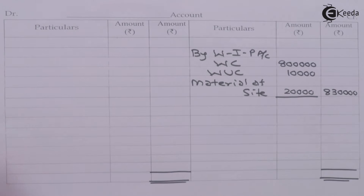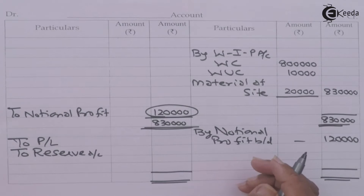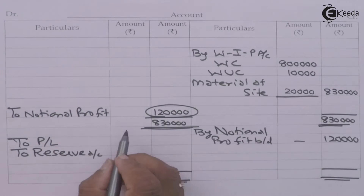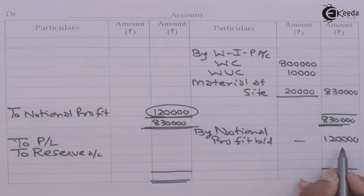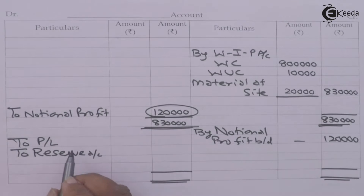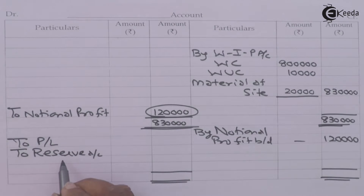Now we proceed to close the contract account first. After closing the contract account, we get a notional profit of 1,20,000. This is brought down, and we are required to split the notional profit between the profit and loss account and reserves. We need a small working note for that.